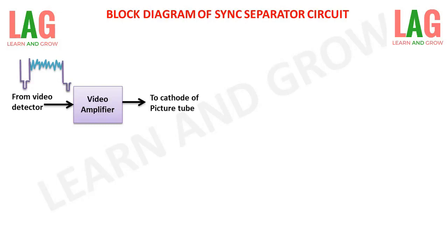In this block diagram, first of all the video detector will detect the composite video signal and apply it to the video amplifier. The phase of the applied composite video signal is shifted by the video amplifier, and the shifted output is applied to the cathode of the picture tube to telecast the information.